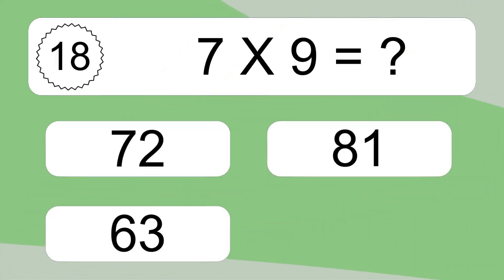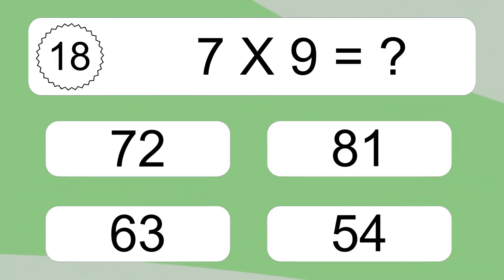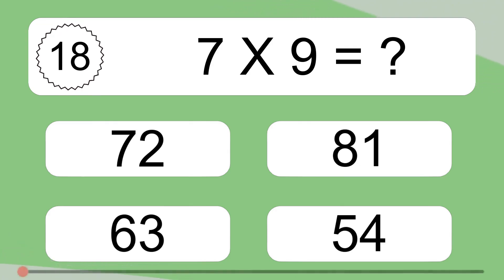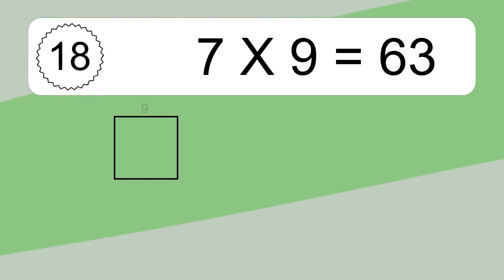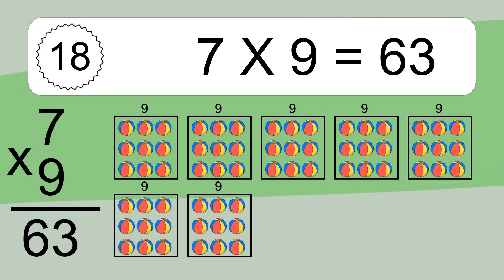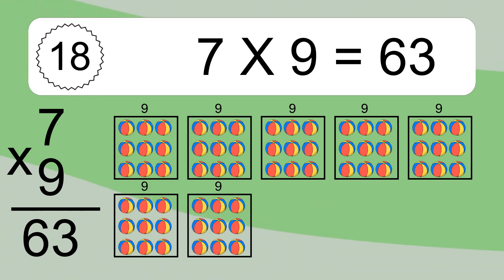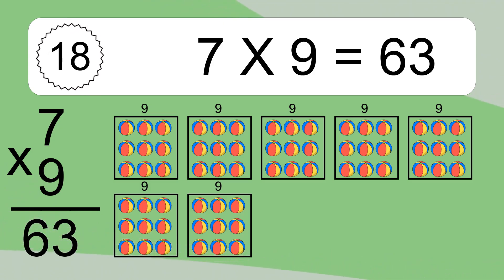7 times 9 equals what? 7 times 9 equals 63. We have 7 boxes, and each box has 9 colorful balls inside. If you count all the balls in all the boxes together, you will have 7 times 9 balls. This equals 63 balls.